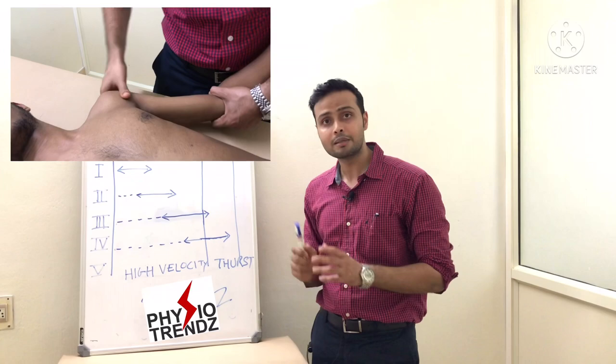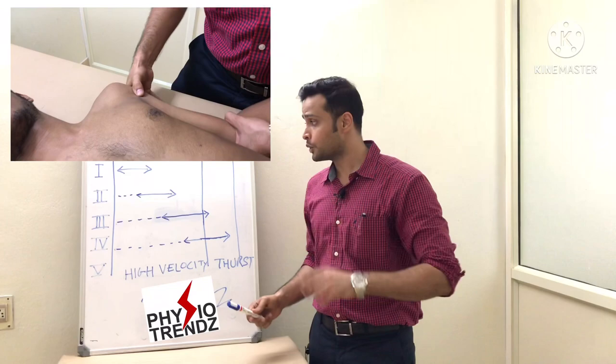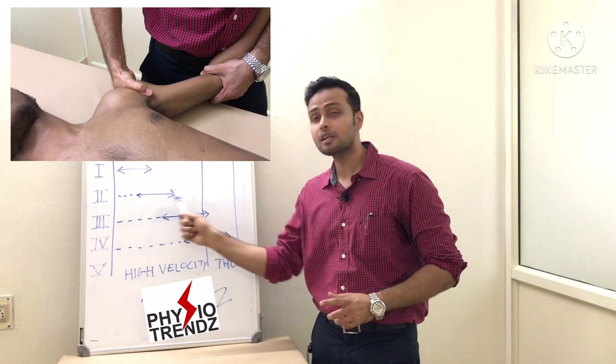First grade says that it is a small amplitude rhythmic oscillations given in the beginning of the range of motion. Grade 2 is again large amplitude rhythmic oscillations given in the available range.